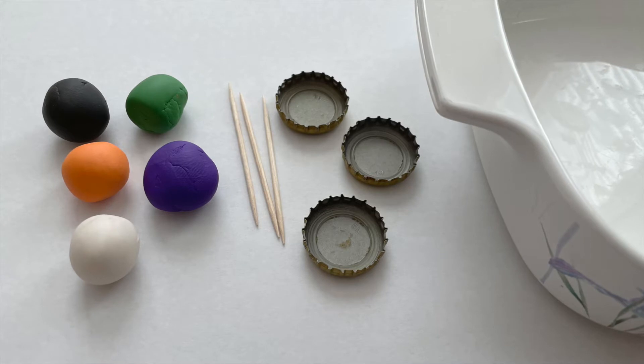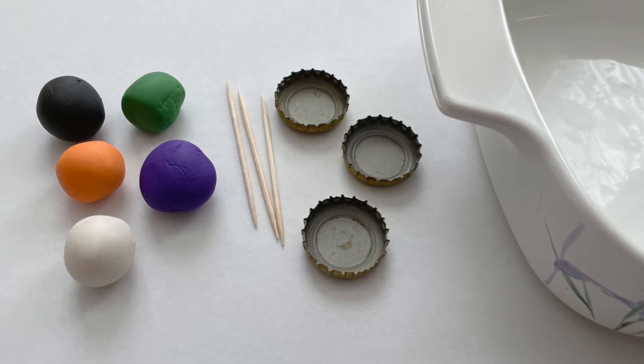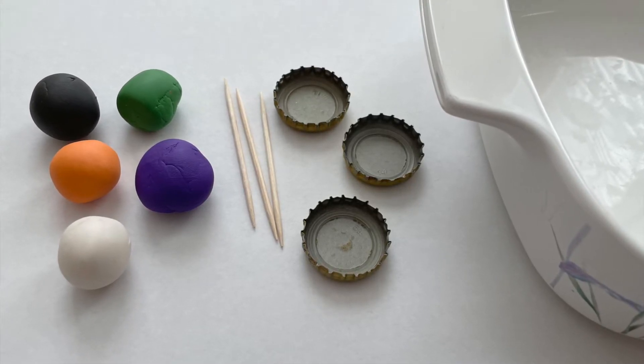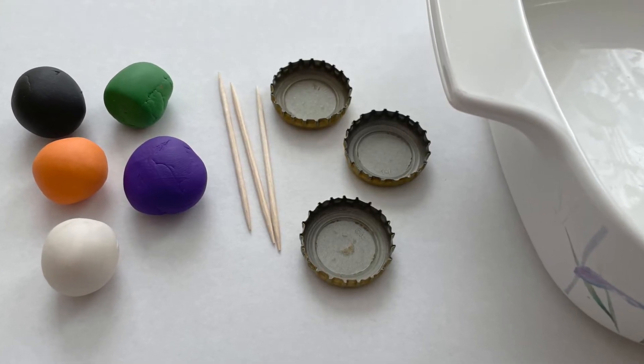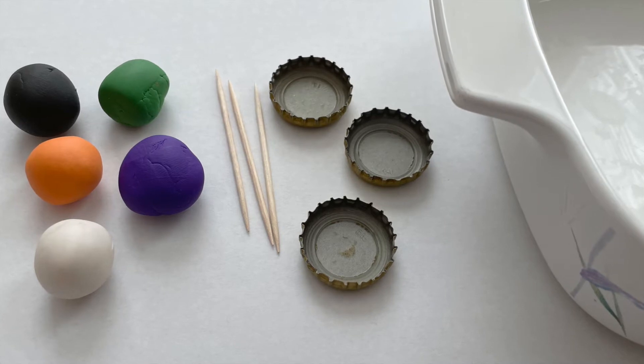So let me show you how to make the three bottle caps. You will need polymer clay - I've used black, orange, white, green, and purple - toothpick, metal bottle caps, and a baking pan that is not metal such as glass or ceramic.